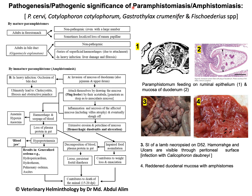Pathogenesis or pathogenic significance of paramphystomyosis or amphystomyosis. Paramphystomyosis is caused by different species, some of which are listed here: Paramphystomum sarvi, Cotylyphoron, Cotylyphoram, Gastrothylax, and Fiscadarius species. Pathogenesis is caused by the adult parasite as well as immature parasites or amphystoms.